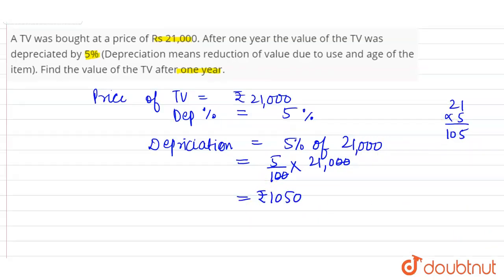Now it is asking to find the value of TV after one year. The final price of the TV after one year will be the original price, which is 21,000, minus the depreciated value, which is 1,050.